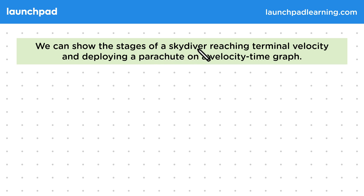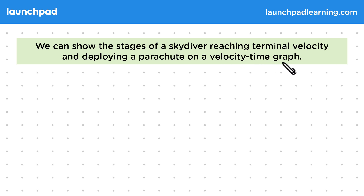We can show the stages of a skydiver reaching terminal velocity and deploying a parachute on a velocity-time graph. Remember that terminal velocity is the constant speed an object will eventually reach when air resistance balances weight. For your exam you'll need to be able to interpret velocity-time graphs for a variety of falling objects. We'll focus on a skydiver here as it has all of the components of other graphs you might encounter in this topic. Make sure you can understand why each part of the graph looks the way it does so you can apply this knowledge to other examples.